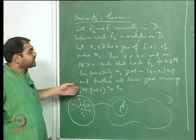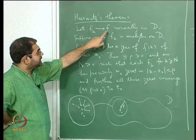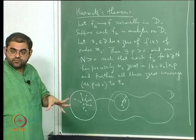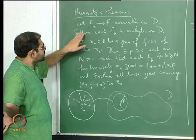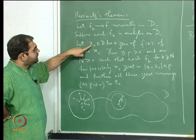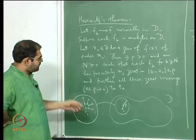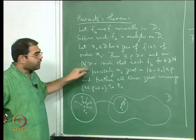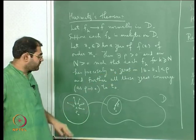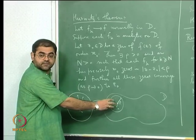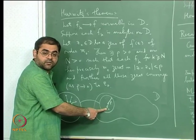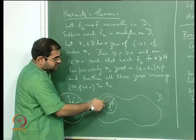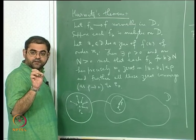More precisely, the statement is: if f_k is a sequence of analytic functions that converge to the function f normally in D — mind you, normally means the convergence is uniform not on the whole of D but on compact subsets of D — and suppose each f_k is analytic, and if z_0 is a zero of the limit function f, then there is a small disk surrounding z_0 such that beyond a certain stage n, all the f_k for k greater than or equal to n have the same number of zeros counted with multiplicity in this disk as the multiplicity of z_0, namely the order of the zero z_0 of f. And as rho gets smaller, all these zeros of the various f_k's converge to z_0.